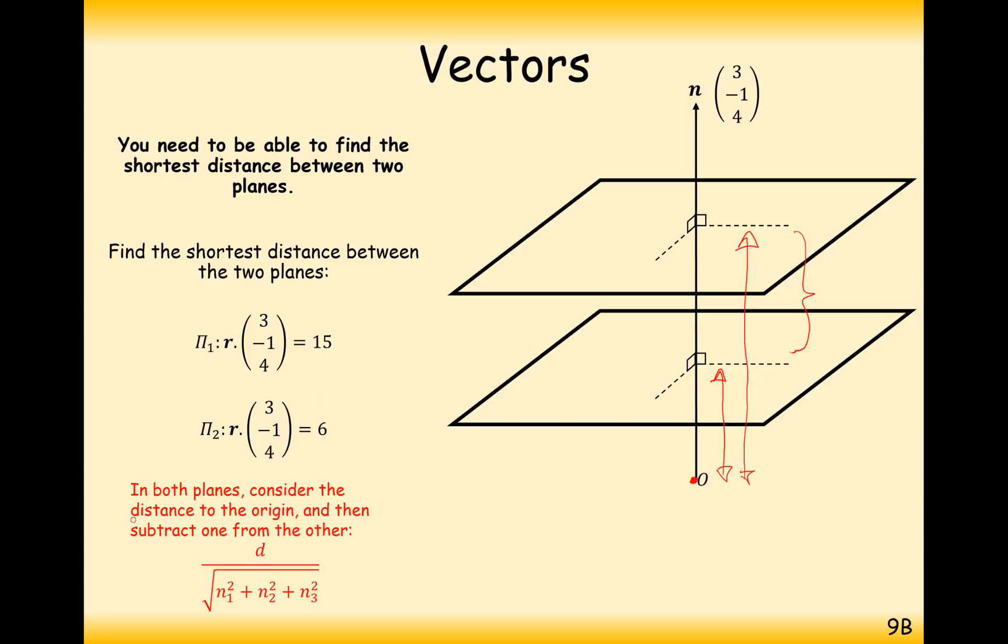In both planes, consider the distance to the origin, and then subtract one from the other. The distance for plane number one is going to be 15 over the square root of 3² plus 1² plus 4², which is √26. So that's 15/√26. The distance for the second plane is going to be 6 over this same modulus, so 6/√26.